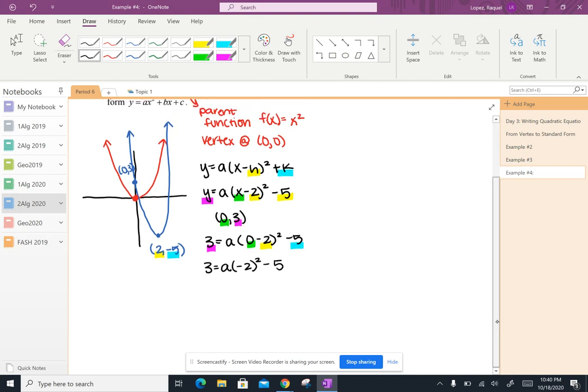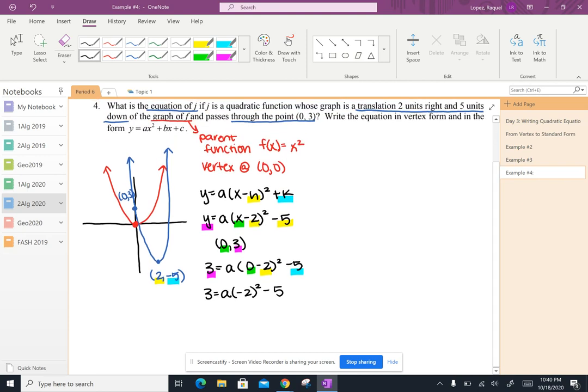When I start simplifying, I get three equals a, zero minus two is negative two, and I'm going to copy down the rest of that equation. Following order of operations means I'm going to take care of any exponents I see and that exponent is acting on the negative two. So I get three equals negative two times itself is positive four. So I get four a minus five, and then I can work backwards to solve for a. So I'm going to add five to both sides of my equation.